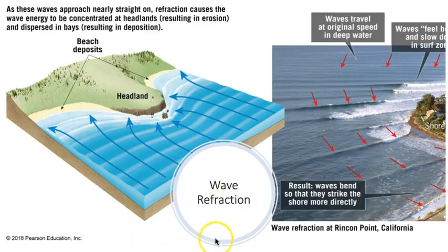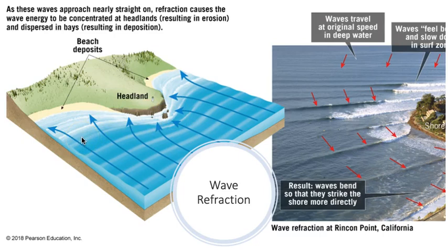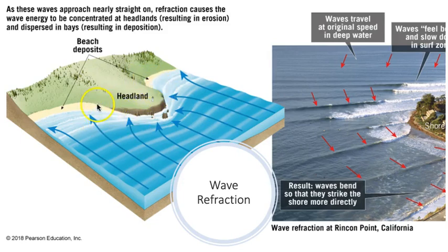Wave refraction helps to concentrate erosion along a shoreline. As waves approach, they slow where they first encounter shallow water — remember, this is at a depth of half their wavelength — while the rest of the wave continues to travel at its original speed. The result is a wave that wraps around land protrusions called headlands, and erosion is concentrated along the sides of these landforms.